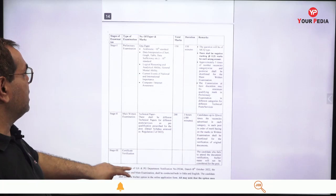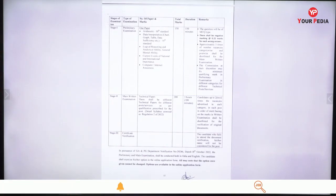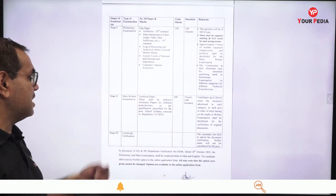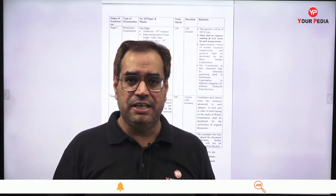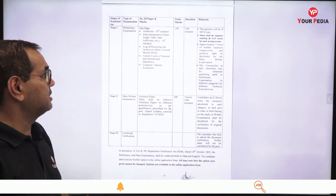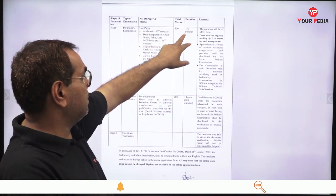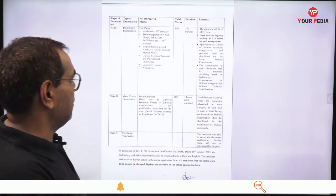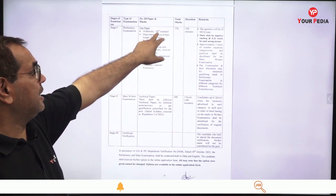Now let's talk about the exam pattern. There are mainly three stages: Stage 1 is the Preliminary Exam, Stage 2 is the Main Written Exam, and Stage 3 is Certificate Verification. There is no interview — final selection is based on written exam and document verification. The Preliminary Exam has one paper of 150 marks with a time limit of 150 minutes, meaning one minute per question. There will be negative marking.